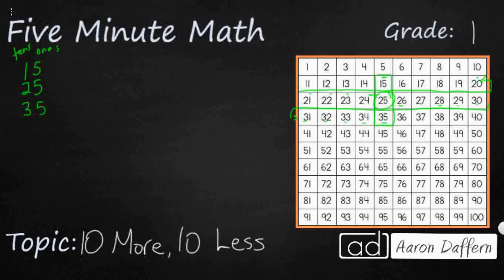Or if you're using a hundreds chart, you can simply change the tens place. So I started with 25. I took away a 10 to make 10 less, and I added a 10 to make 10 more.